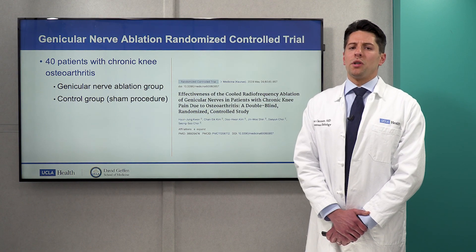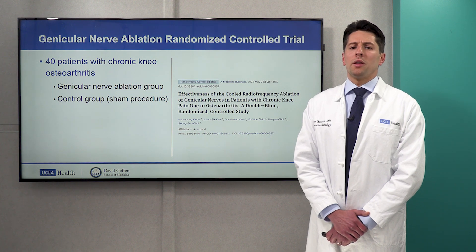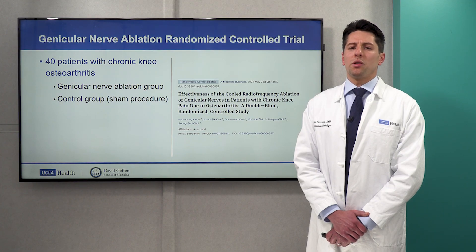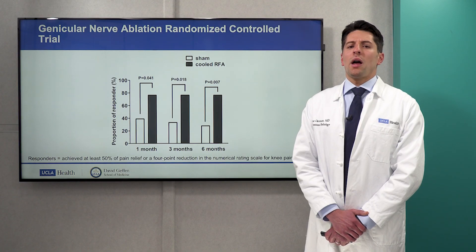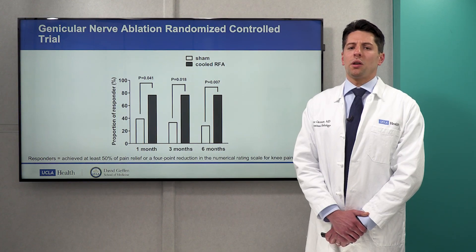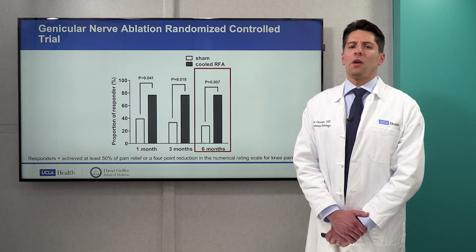So how are the results of geniculate nerve ablation? This is a recent randomized double-blind sham-controlled trial with two groups: one underwent geniculate nerve ablation and a control or sham group in which ablation needles are placed but there is no activation of the ablation generator. At each time point there were a significantly higher proportion of responders in the geniculate nerve ablation group. At six months, 76.5% of patients responded to treatment, suggesting geniculate nerve ablation offers significant pain relief surpassing placebo effects.